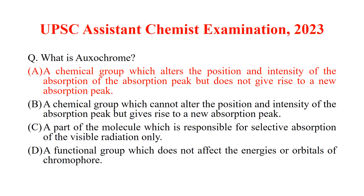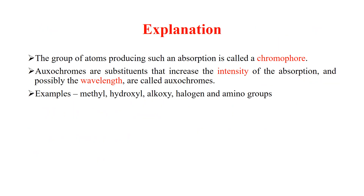What is oxochrome? The answer to this question is option A — a chemical group which alters the position and intensity of the absorption peak, but does not give rise to a new absorption peak. First we should know what is a chromophore. Chromophore is a group of atoms producing an absorption band in the electronic spectra.